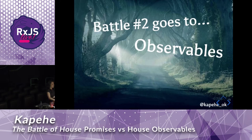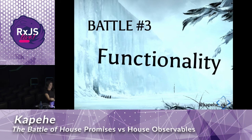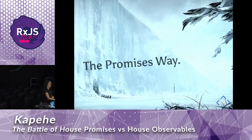Battle number three will be fought in the functionality battlefield. To demonstrate functionality, let's look at two different examples — grabbing information from an API. We'll look at a promises example and an observables example.